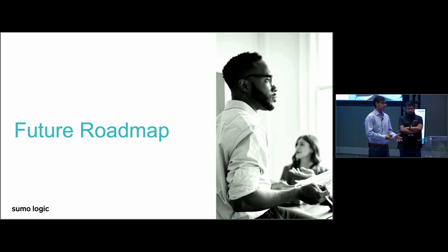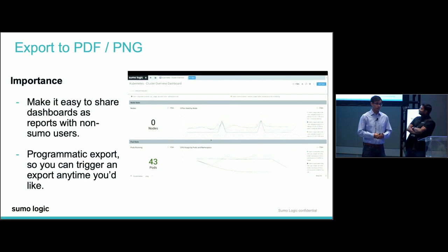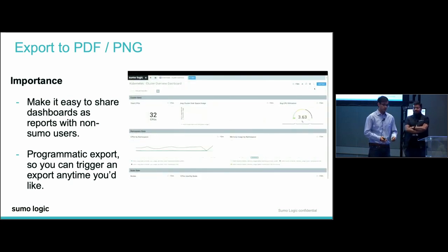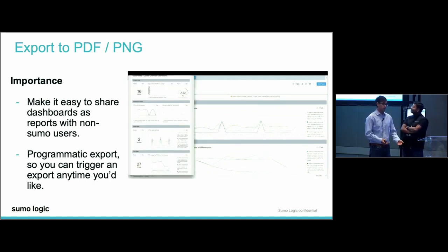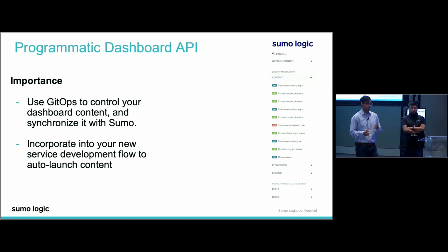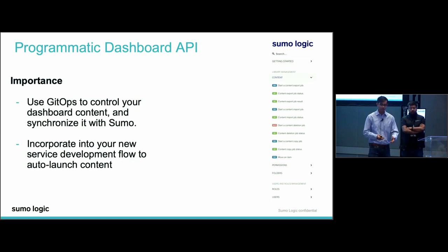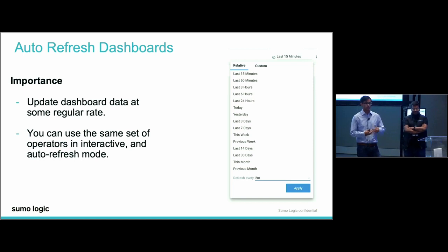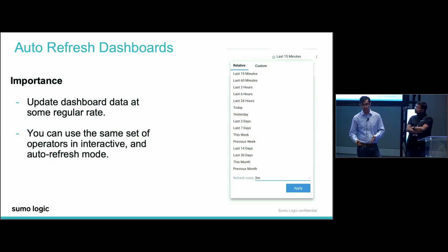Now that we've talked about what's coming out with next-gen dashboards today, let's talk about where we're going even further. We've heard over and over that you want to export to PDF and PNG and schedule those exports—we're making that happen and look forward to it coming out soon as part of the closed beta. We're also announcing a programmatic dashboard API as part of that closed beta, enabling you to create, manage, retrieve, update, and delete your dashboards via APIs so you can check them in with your GitOps process. Whenever you create a new service, you can launch a new set of dashboards, template them, and make sure everything is ready inside of Sumo Logic. Finally, we're taking a hard look at real-time dashboarding, examining auto-refresh dashboards with greater control on refresh rates and expanding group-by and count restrictions.